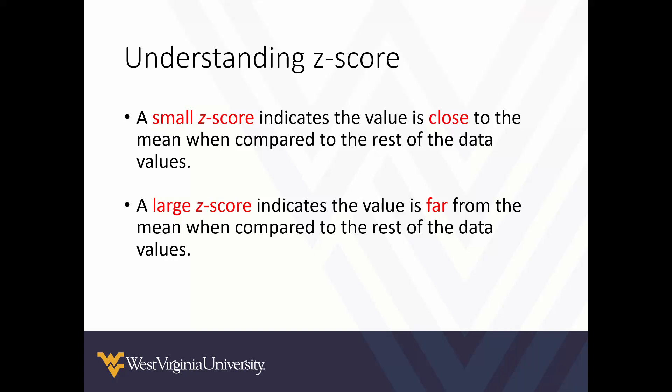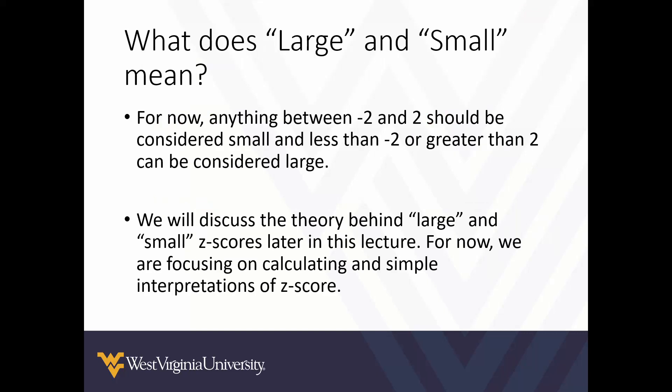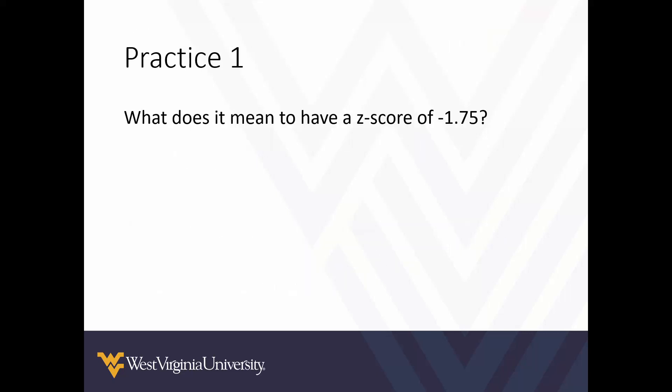The terms large and small don't have exact meanings, but for now: anything between a z-score of negative 2 and positive 2 should be considered small, and anything less than negative 2 or greater than positive 2 should be considered large. We'll discuss the theory behind large and small z-scores later in the lecture when we cover the normal model.